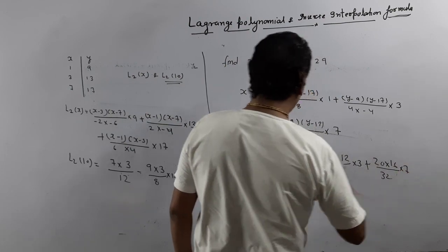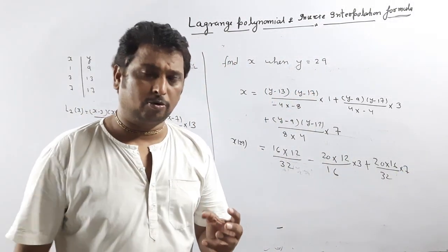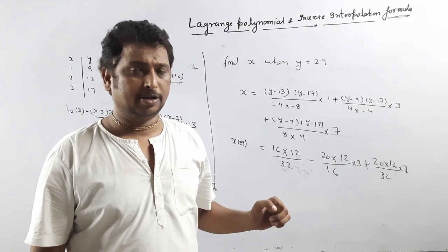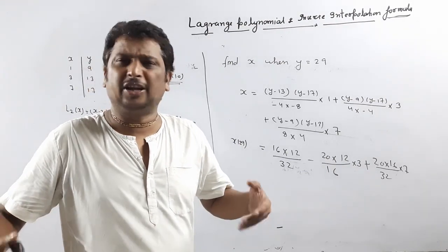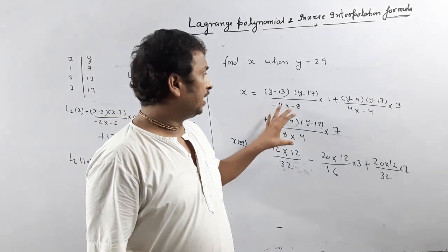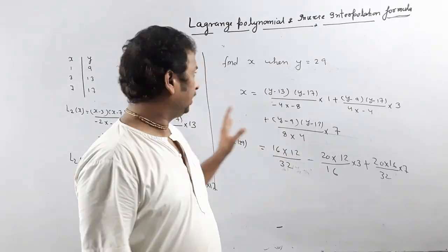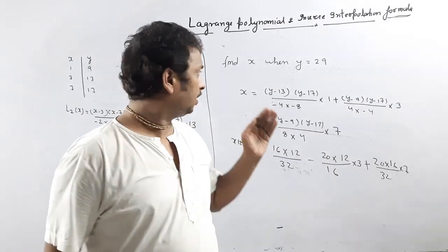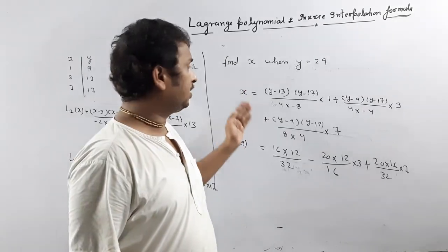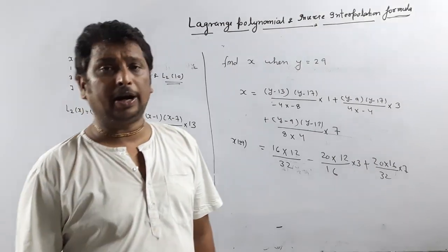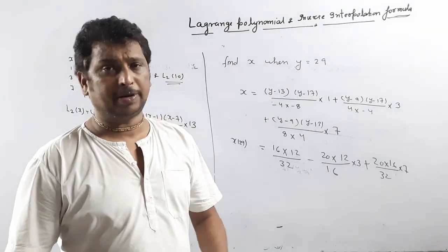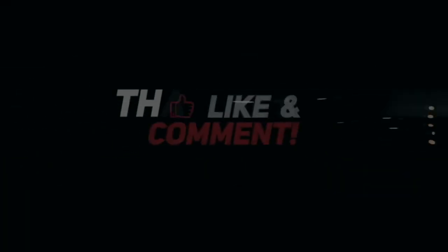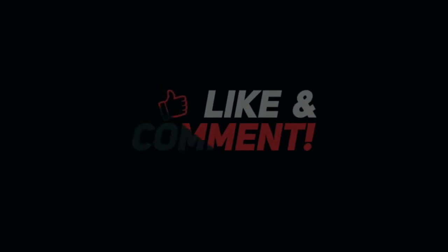Simplify this and you will get the x value. I hope you all understand what Lagrangian polynomial is and what the inverse interpolation formula is. Please take care because sometimes questions are asked in different ways. This is the Lagrangian interpolation formula, and for inverse, just replace x by y and start with the y table first. If any doubt, please write in the comments.